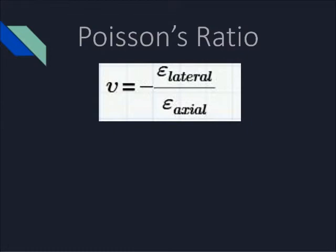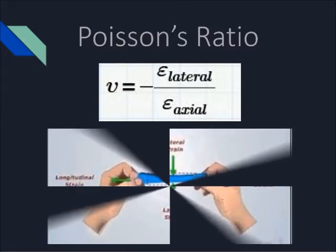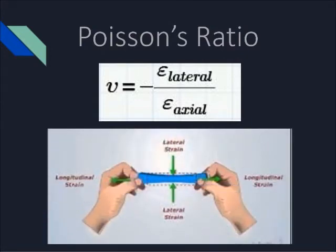Poisson's ratio, or the change in lateral strain over axial strain, can be seen in our figure here below. As the longitudinal direction gets stretched outward, the lateral direction compresses inward.